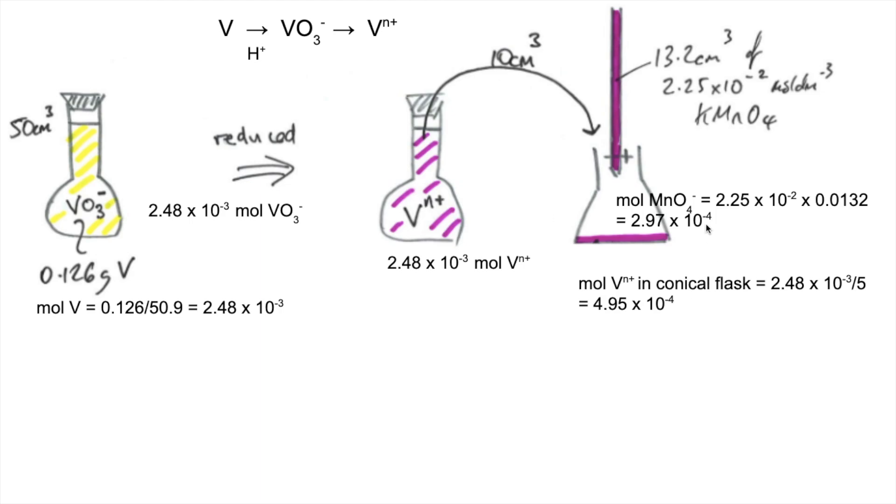So now we know both of the moles, whereas normally in a titration, you don't know the moles in the conical flask. You're going to use the ratio to get them. Well, we know both of the moles, so we're going to use them to get the ratio.